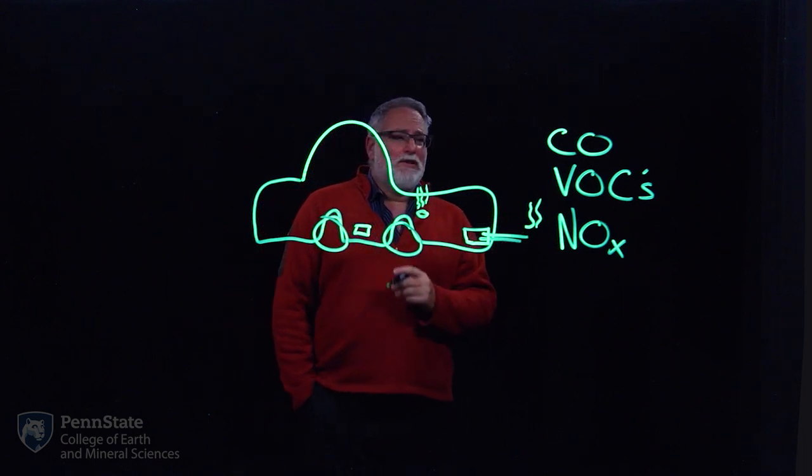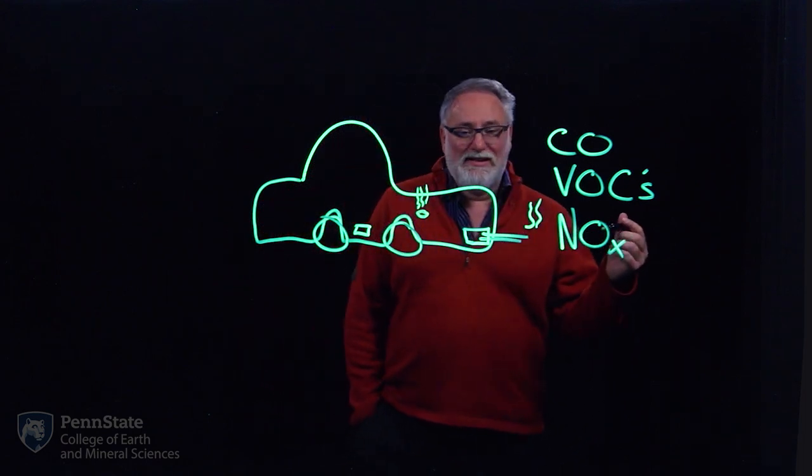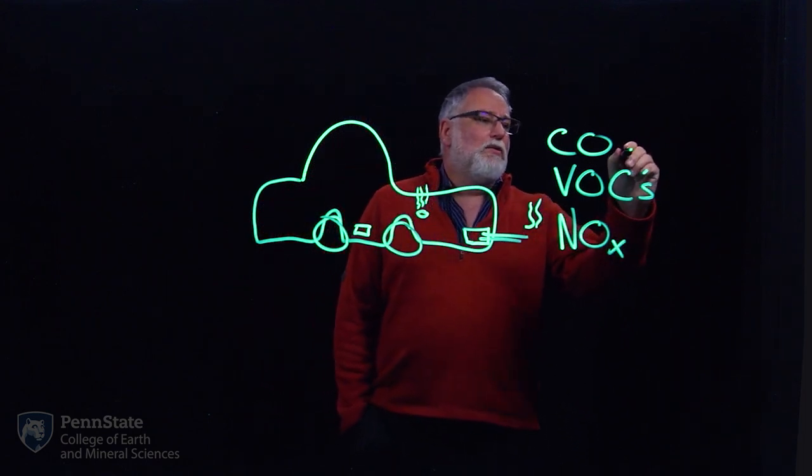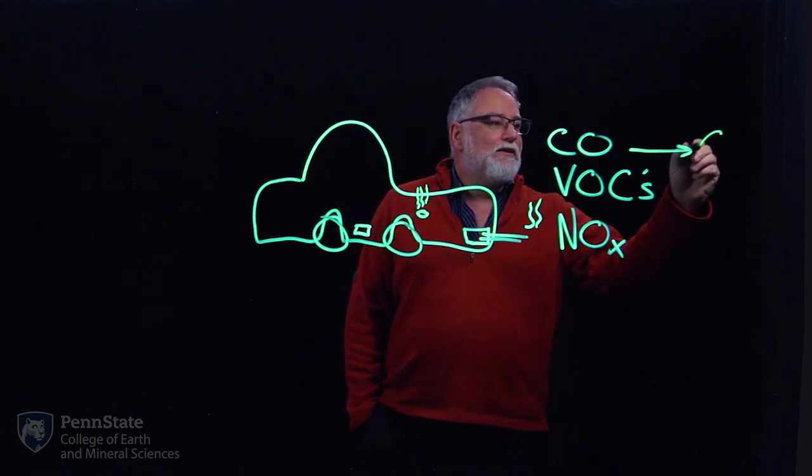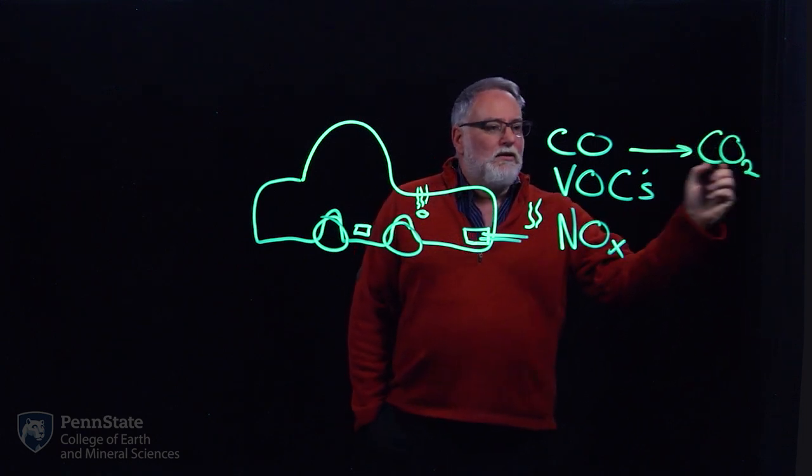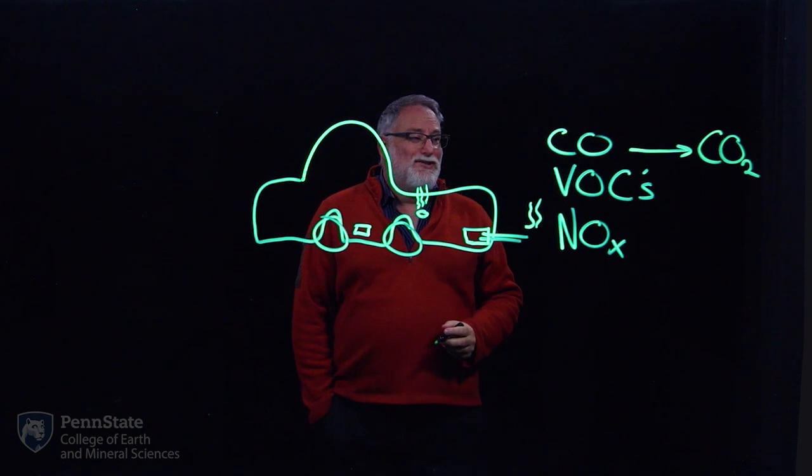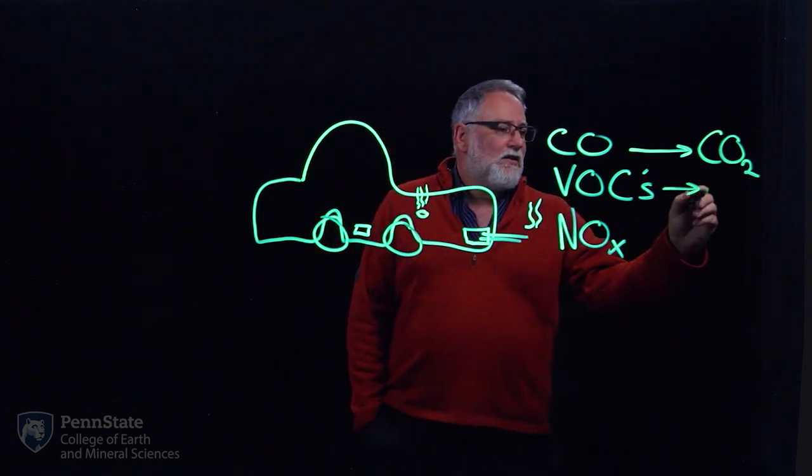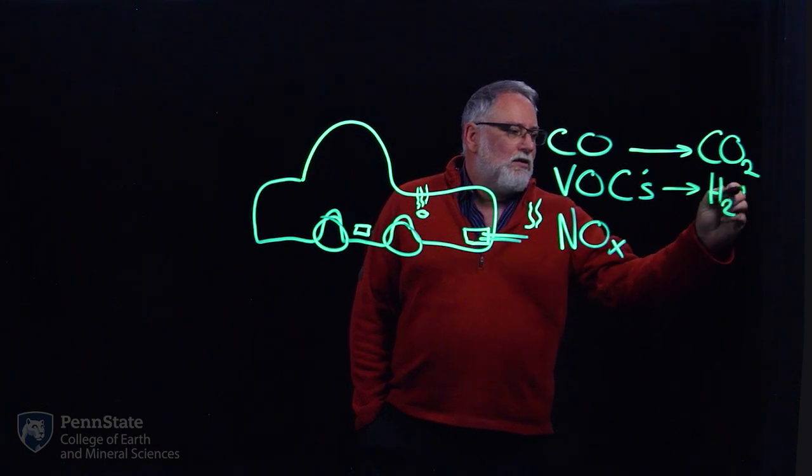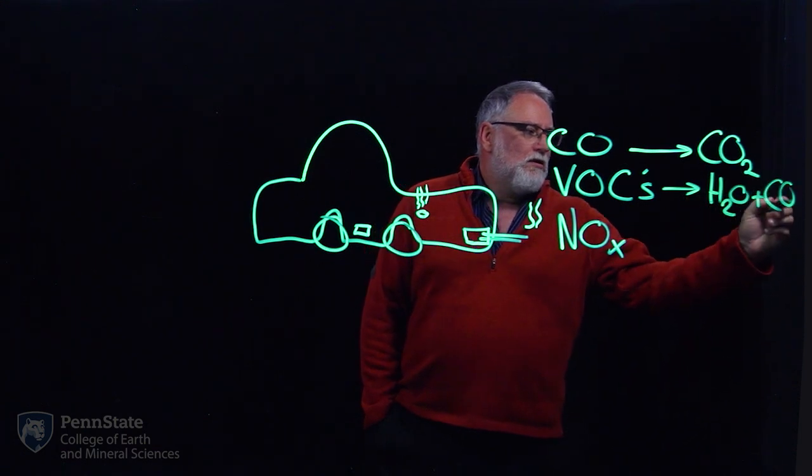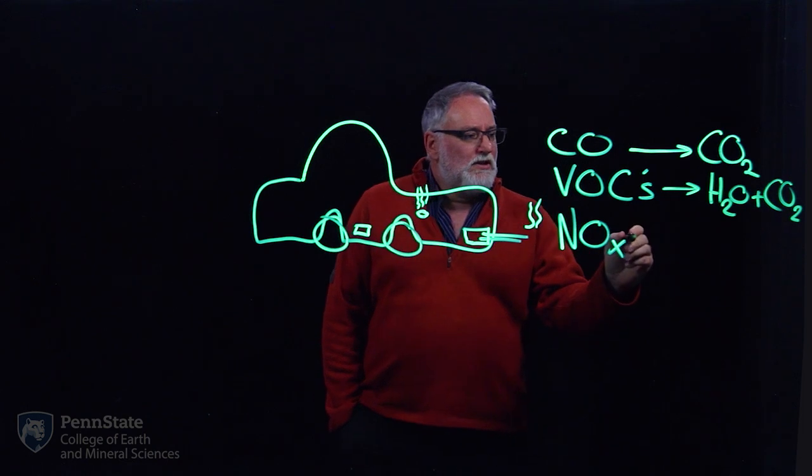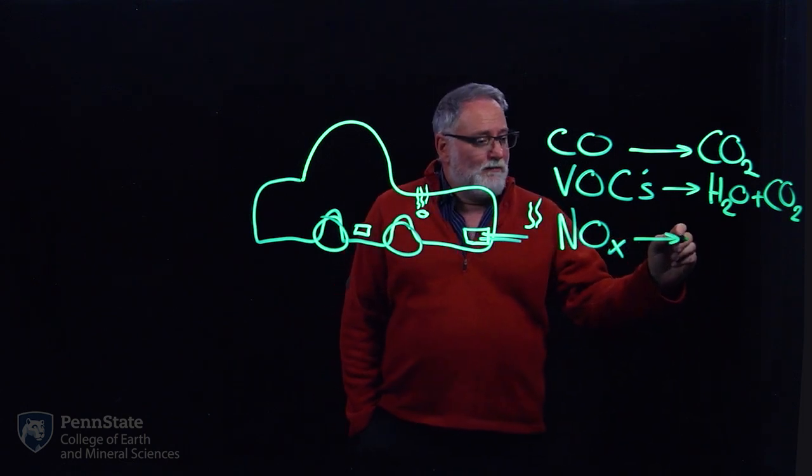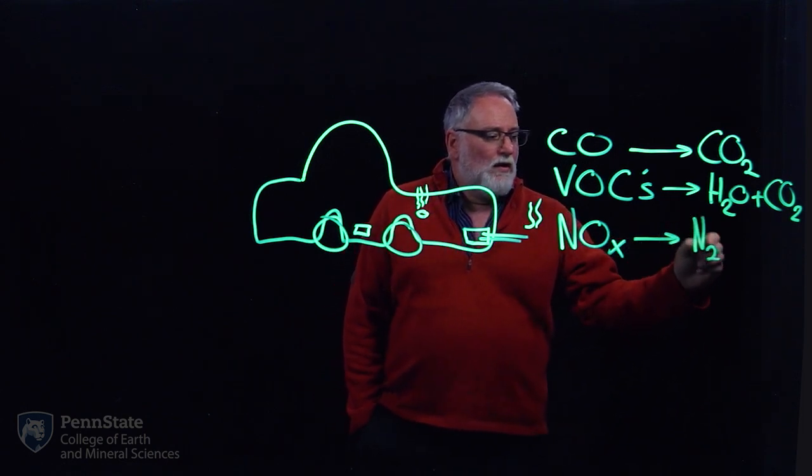So a three-way catalytic converter, what does that mean? Well, we have three things we want to take care of, and we are going to use three different catalysts to do that. So carbon monoxide is going to get oxidized to carbon dioxide. The VOCs are going to get oxidized to H2O and CO2, while the NOx is going to get reduced to N2.